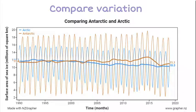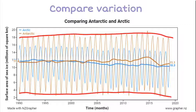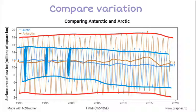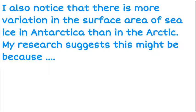Comparing variation: if I draw a line hitting the top points together and the bottom points together, there's my Antarctic. If I do the same thing for the Arctic, I can see the top points and the bottom points, and the Antarctic has much wider variation than the Arctic. So there is much wider variation in the amount of surface area of sea ice in Antarctica than in the Arctic, and this is where I'd need to go to Google and look up reasoning for why that might be.